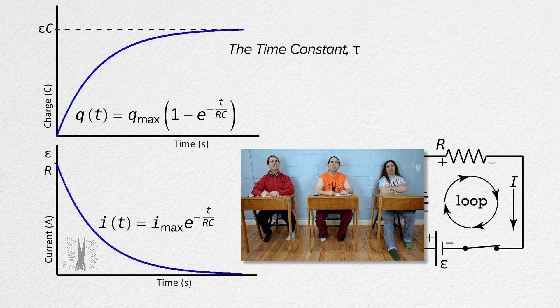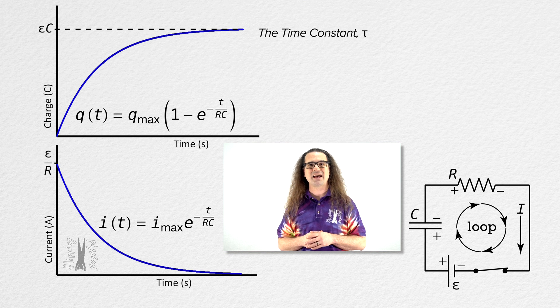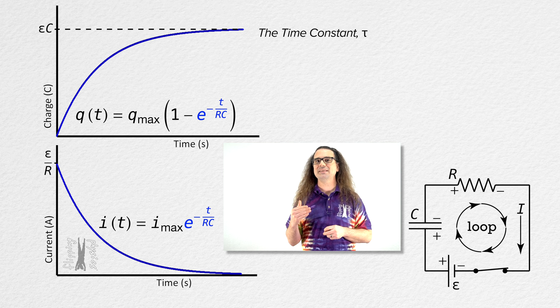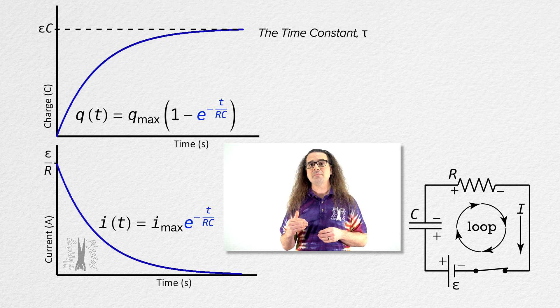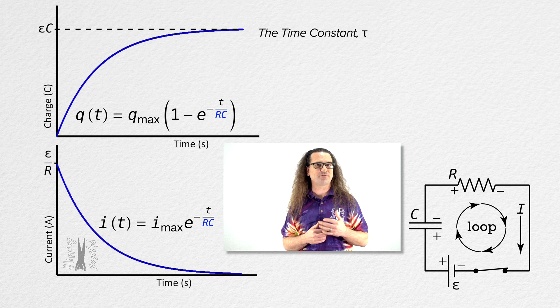Both the equation for charge as a function of time and the equation for current as a function of time have this expression in them: e to the power negative time over the quantity resistance times capacitance.